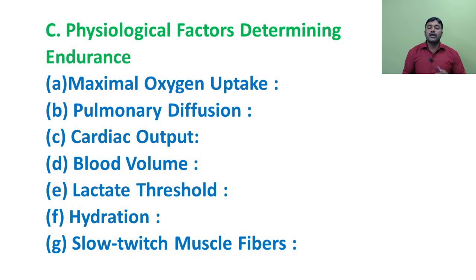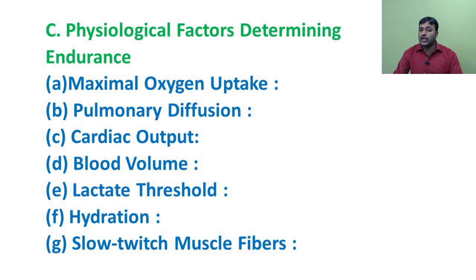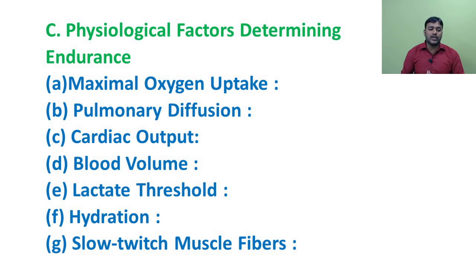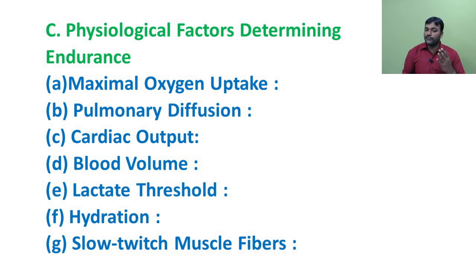Next, third: physiological factors determining endurance. Endurance is the ability of the body to work for a long time without getting fatigued. The following physiological factors determine endurance: maximal oxygen uptake, pulmonary diffusion, cardiac output, blood volume, lactate threshold, hydration, and slow-twitch muscle fibers.